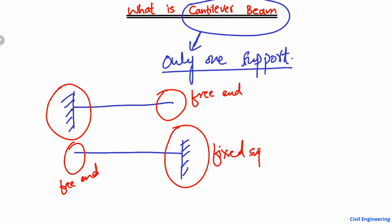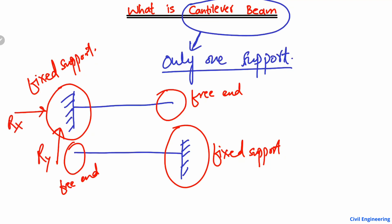Keep in mind — this is very important — the support must be a fixed support, not a hinge or roller support. What is meant by a fixed support? A fixed support means it can take the vertical reaction (Y), it can take the horizontal reaction (X), and it can also take the moment (M). These are the characteristics of a fixed support — it can take all three reactions.